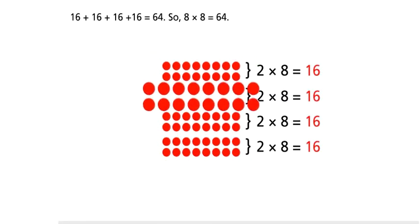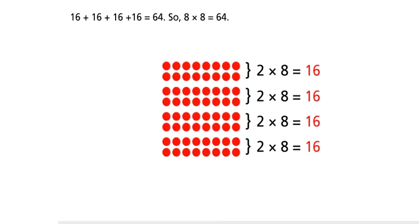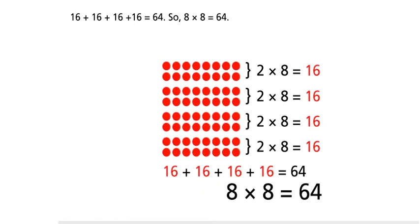16 plus 16 plus 16 plus 16 equals 64. So, 8 times 8 equals 64.